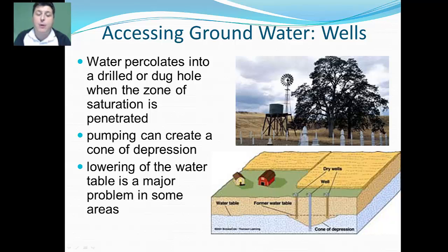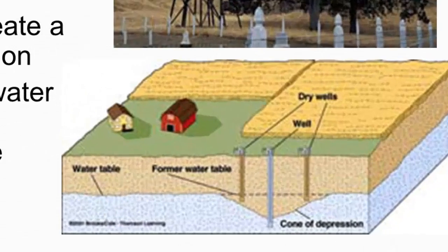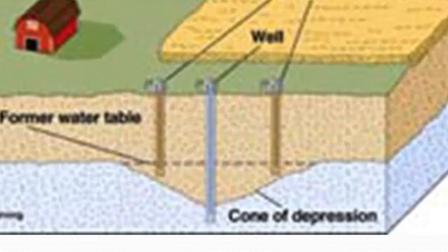Unfortunately, if we pump the water too fast and it doesn't replenish, the ground itself can subside — called subsidence — forming what's known as a cone of depression. Notice in this image this farmer had three wells, but because of how he was pumping the water out, this cone of depression formed and actually dried up some of his wells, perhaps requiring him to dig a deeper well to access that water again.